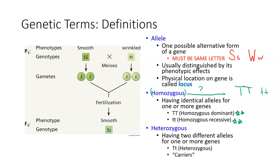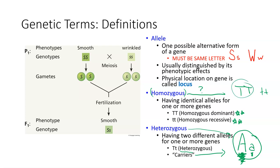Heterozygous means you have two different alleles — one uppercase and one lowercase — for a gene. 'Hetero' means different. You don't need to specify dominant or recessive for heterozygous because it has both. This is typically known as being a carrier — you might carry a recessive trait, which could be good or bad. For the most part, you're going to see the dominant feature displayed.